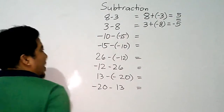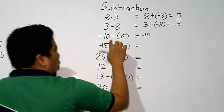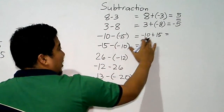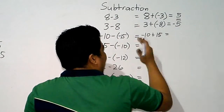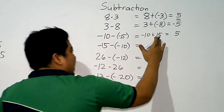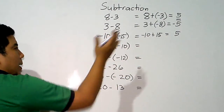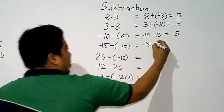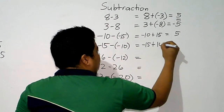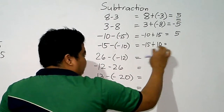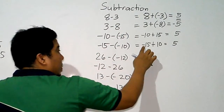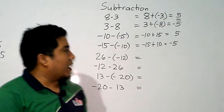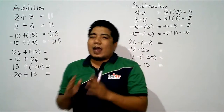Now in subtraction: negative 10 minus negative 15. We copy the minuend negative 10, change minus into plus, and change negative 15 to its opposite, positive 15. We now have negative plus positive — different signs — so we subtract, getting 5. Since 15 is bigger and positive, the answer is positive 5. For negative 15 minus negative 10: we copy negative 15, change minus to plus, change negative 10 to positive 10. Again different signs, subtract to get 5, but here 15 is the bigger value and it is negative, so the final answer is negative 5. As you can see, the answers are still not the same, unlike in addition where both were the same.